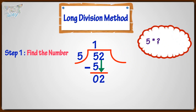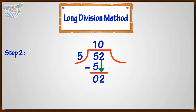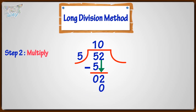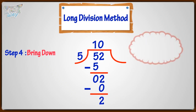Think this way: 5 multiplied by what gives us a number which is less than or equal to 2? 5 multiplied by 0 gives us 0. So, 0 is the number we want. Write it in the quotient. The second step is multiply. Multiply 5 with 0 and write the multiple below. The third step is subtract. Subtract and write the difference below. The fourth step is bring down — we have no number in the dividend to bring down, so our division is complete.